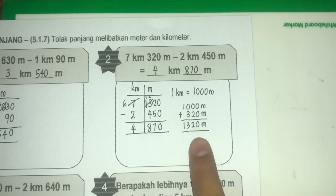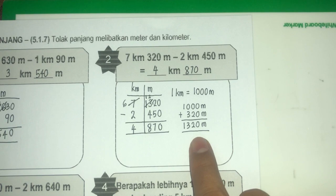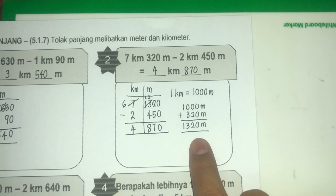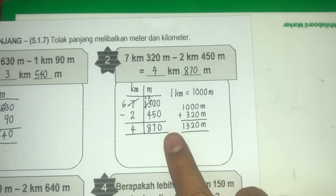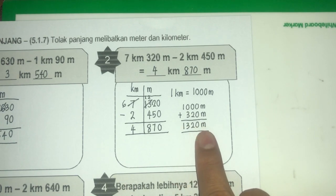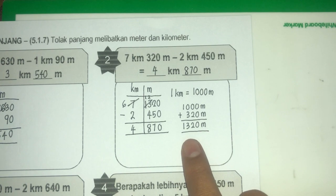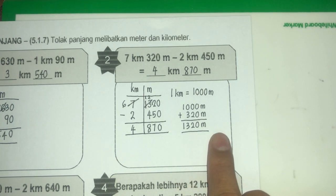Cikgu ajar secara pelan-pelan supaya awak faham. Lepas ni kita akan terus congak je. Kalau kita dah congak, kita terus dapat jawapan iaitu 1,320 — 1,000 tambah 320. Kita kena ada kemahiran mencongak kat situ.